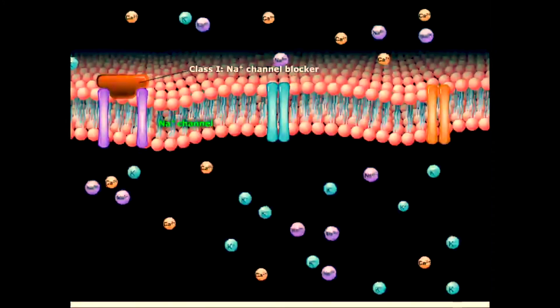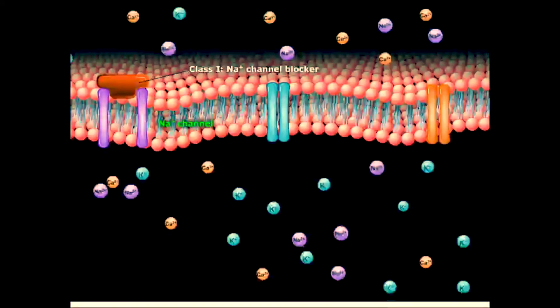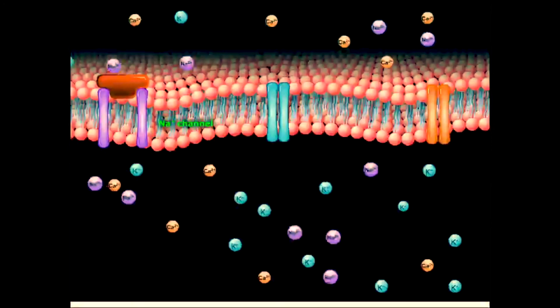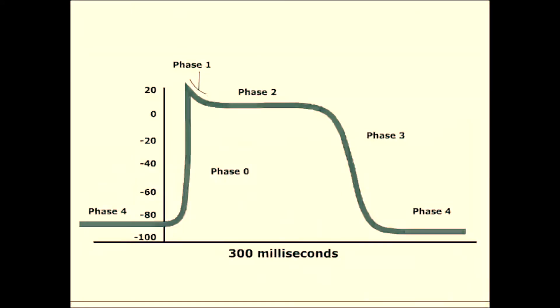Class 1 antiarrhythmic drugs are sodium channel blockers. They bind to and block the fast sodium channels. The steep slope of phase 0 depends on the rapid influx of sodium through fast sodium channels. Blocking these channels thus decreases the slope of phase 0. The amplitude of the action potential is therefore also decreased. In addition to decreasing the slope of phase 0, sodium channel blockers alter the duration of the action potential, and thus the effective refractory period, or ERP. This is the period of time when a new action potential cannot be initiated.